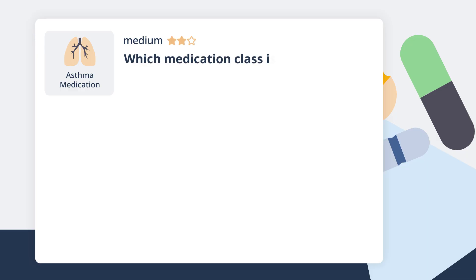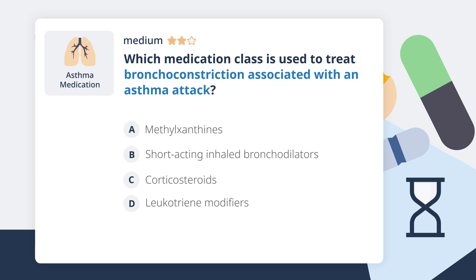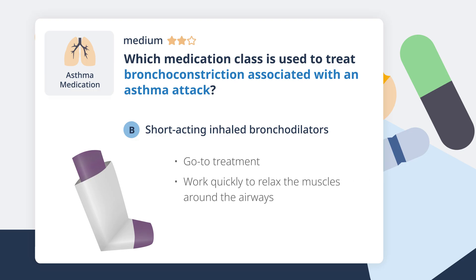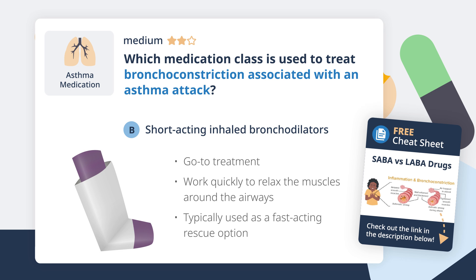Which medication class is used to treat bronchoconstriction associated with an asthma attack? Short-acting inhaled bronchodilators are the go-to treatment for bronchoconstriction during an asthma attack. These medications, like albuterol, work quickly to relax the muscles around the airways, helping to open them up and improve airflow. They're typically used as a fast-acting rescue option during an asthma flare-up.